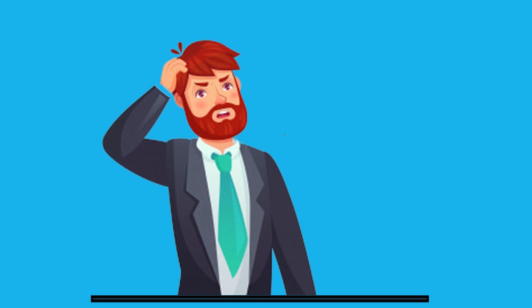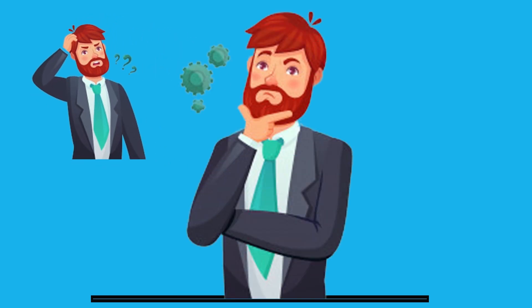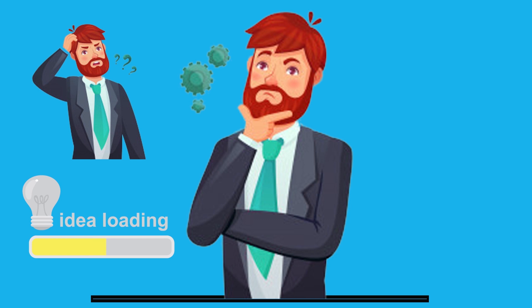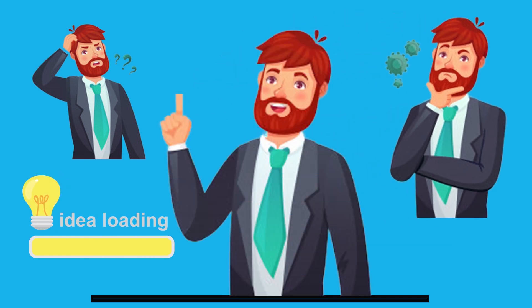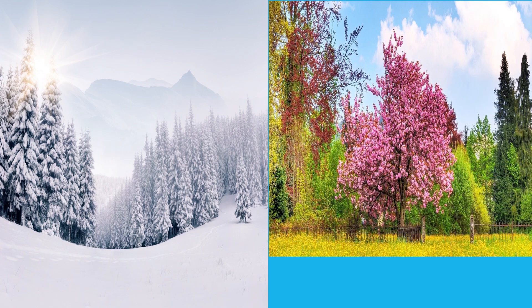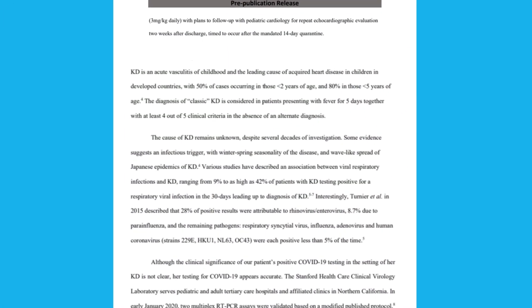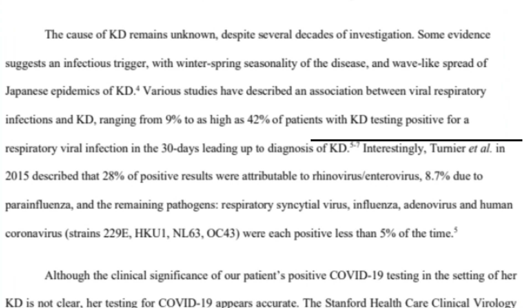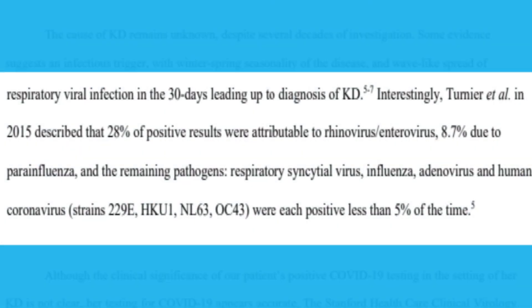The etiology of Kawasaki disease is unknown, and there are no diagnostic tests for it. But the evidence suggests that Kawasaki disease may be triggered by a response to an infectious agent. The peaks of Kawasaki disease generally occur during winter and spring. A research done by Ternier & Co. in 2015 described that 28% of positive results were attributable to rhinovirus or enterovirus, 8.7% due to parainfluenza, and the remaining pathogens — respiratory syncytial virus, influenza, adenovirus, and human coronavirus — were each positive less than 5% of the time.